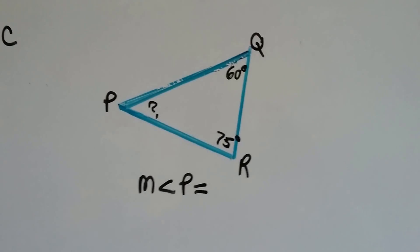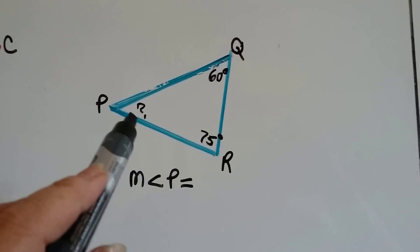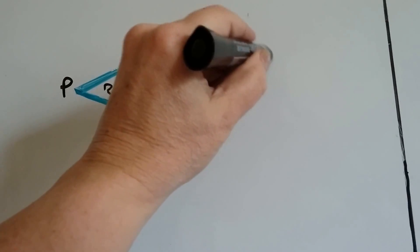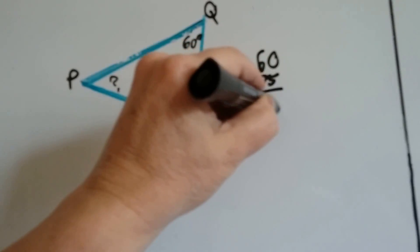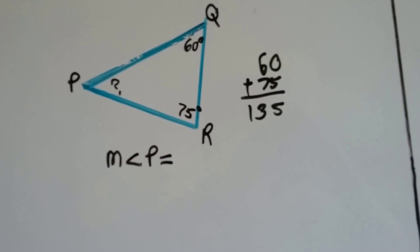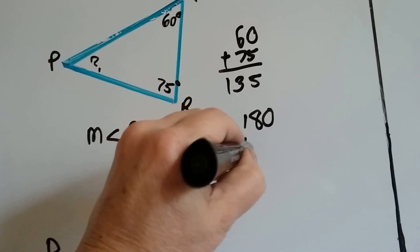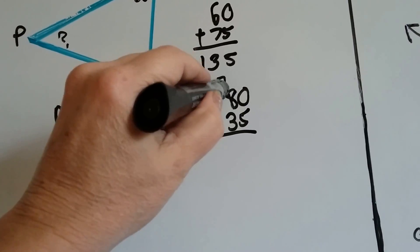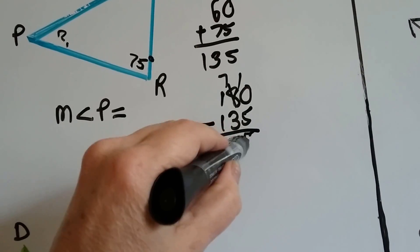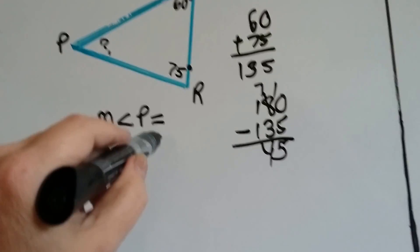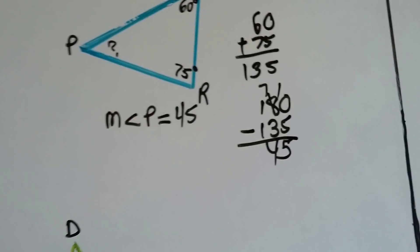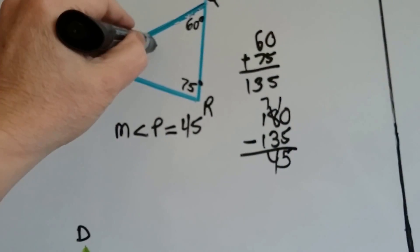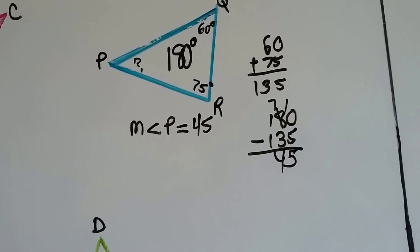All right. Let's do this one. We have triangle PQR. What's the measure of angle P? Well, that's 75, and that's 60. So let's add them. That's 135. What's 180 minus 135? That becomes a 7. That's a 10. We've got a 5 and a 4. So we know the measure of angle P is 45.